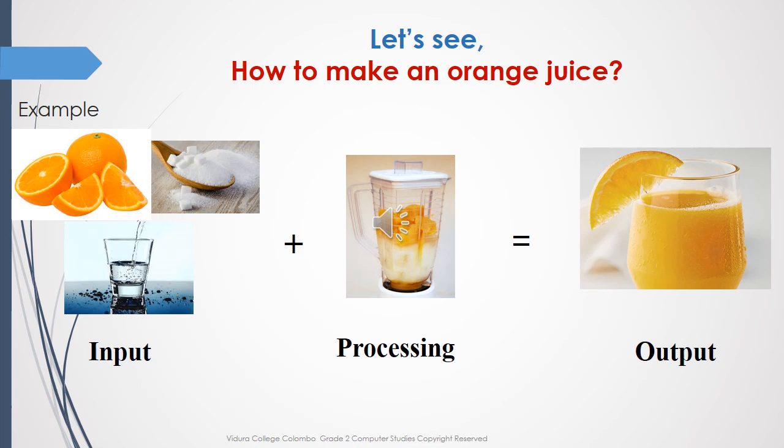Children, do you know why I taught you to make an orange juice? Because first of all, you have to learn the three steps of how a computer works: input, processing, and output. This is the best example from a home environment. Orange, sugar, and water are our input. The mixing part is our processing. Orange juice is our output.